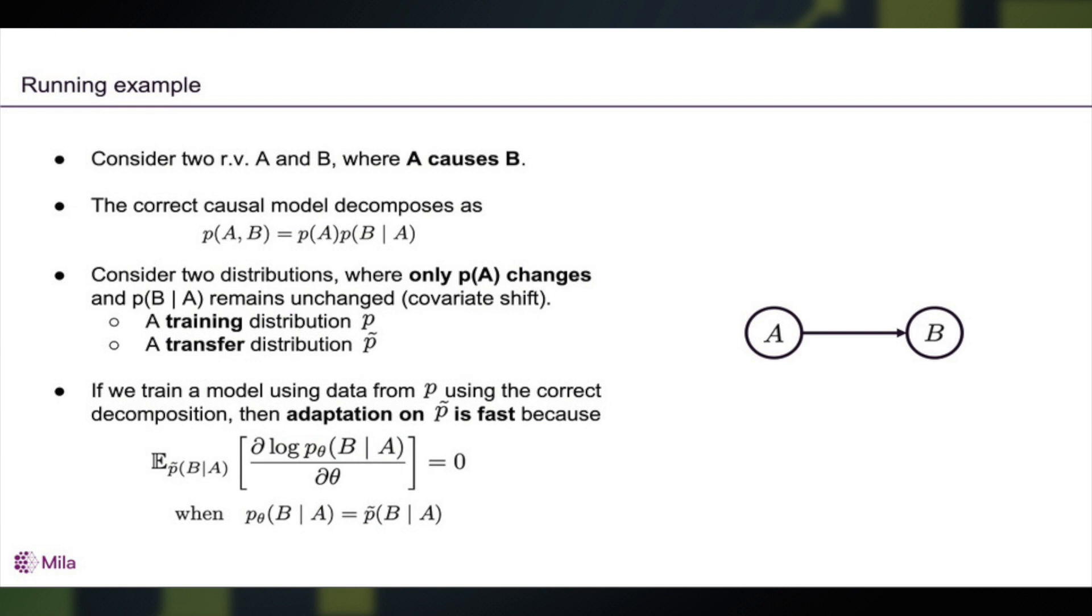Our first result suggests that if you consider the two possible factorizations of the joint, one corresponding to the causal structure and the other having the wrong causal structure, the one that has the correct causal structure will have a special property. If we do the intervention on, say, a cause A, that means that the conditional P of B given A doesn't need to change.